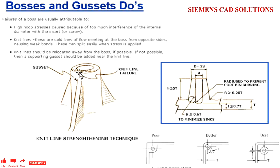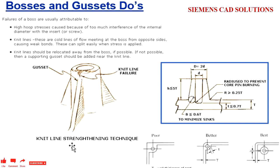Whenever you are creating the boss, while doing the mold analysis, you need to position your boss accordingly. The weld line should be relocated away from the boss if possible. If not possible, then you will need to have gussets. We need to have a minimum of 0.6D near the hollow. For midline strengthening techniques, adding a fillet on this area will give you better boss strength, and gussets should be placed like this instead of at the corners so the material will cool easily and the mold strength will be better.